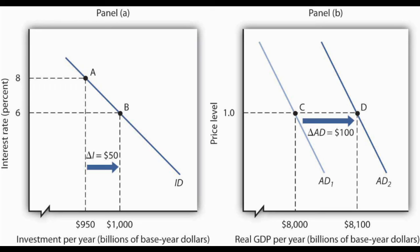Alongside more household spending from consumers who will be saving less because interest rates are lower and spending more, both of those things shift the AD curve to the right, increasing real GDP and raising inflation if no other changes occur.